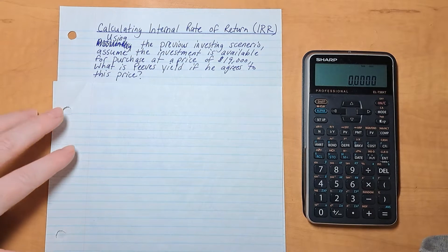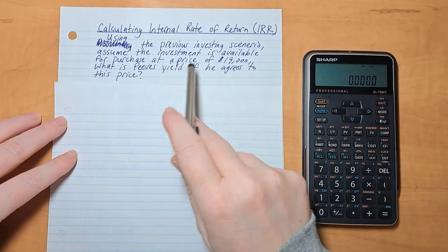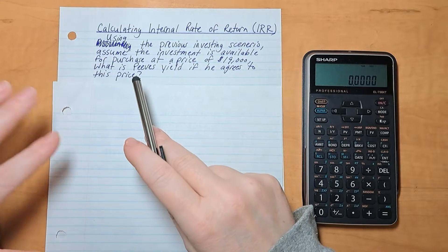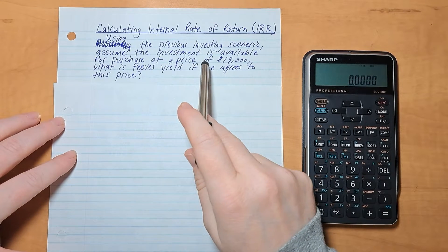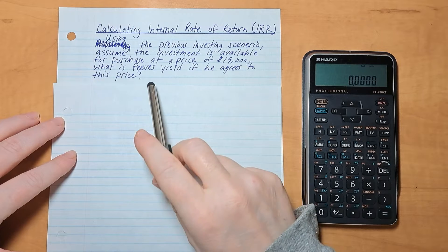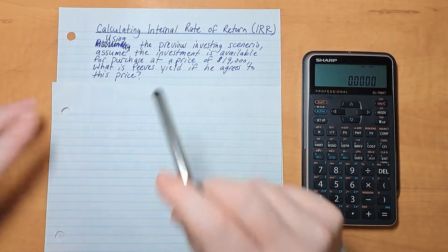Okay, so let's calculate the internal rate of return. Using the previous investing scenario, which I'll show in a second, assume the investment is available for purchase at a price of $19,000. What does Peeves yield if he agrees to this price?